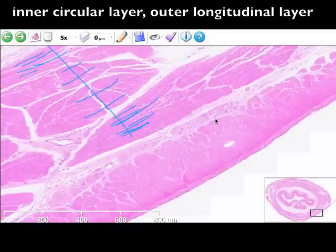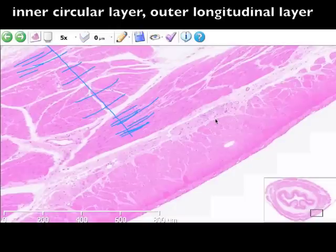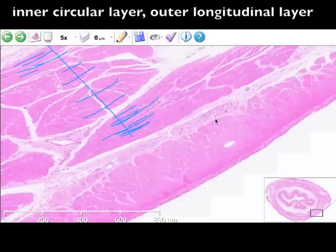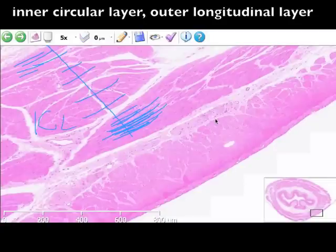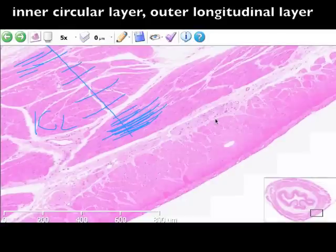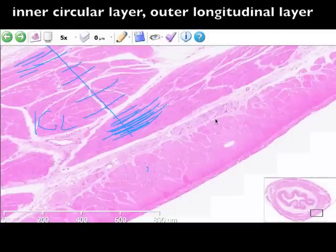So they're cut longitudinally, but it's a transverse section of the organ. Therefore, these muscle cells run, this muscle layer runs circularly, inner circular layer. And here we see very short profiles. We see very small profiles of the muscle cell. I can't even draw it at this magnification, but these are all individual sort of circular muscle cells in there.